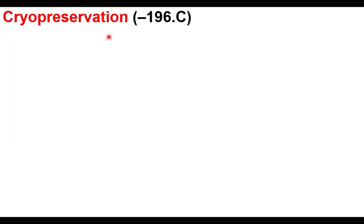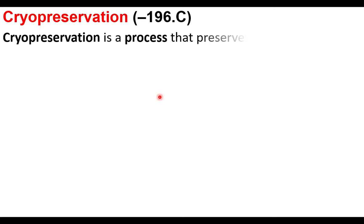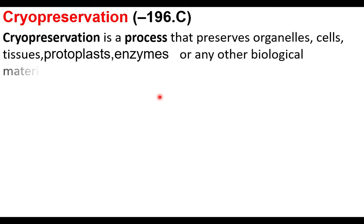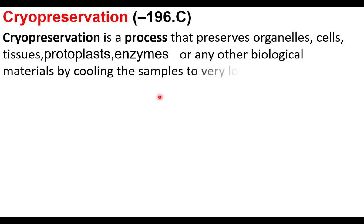Cryopreservation is a preservation technique in which plant materials are preserved under very low temperature — minus 196 degrees Celsius. Cryopreservation is a process that preserves organelles, cells, tissues, protoplasts, enzymes, or any other biological materials by cooling the samples to very low temperatures.